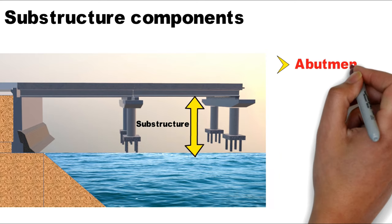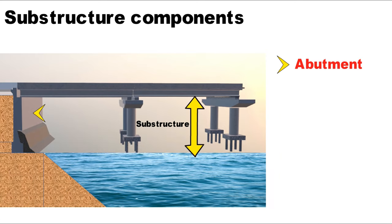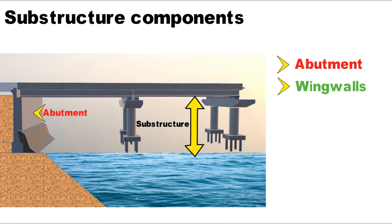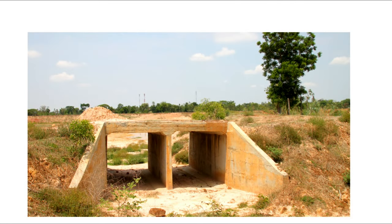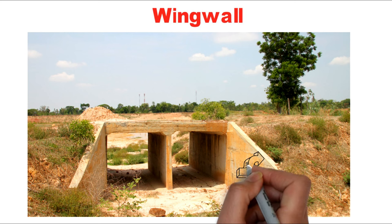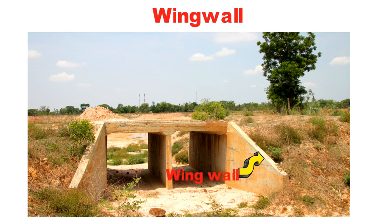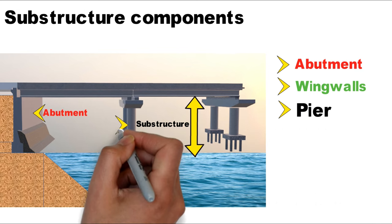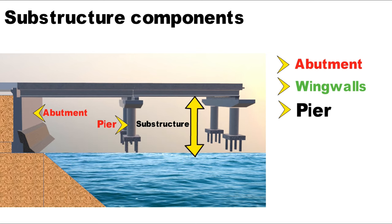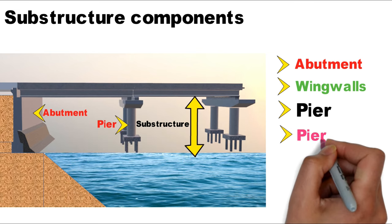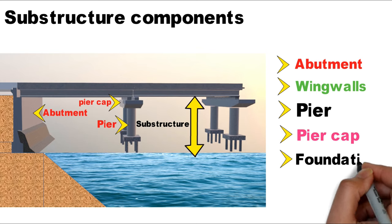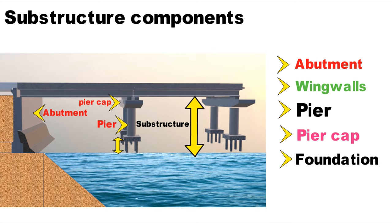The second substructure component is the wing wall, which is a continuation of the abutment. The third one is the pier. The fourth one is the pier cap, which is just above the pier — it is a cap of a pier. Then comes the foundation part, which is the area below the pier.